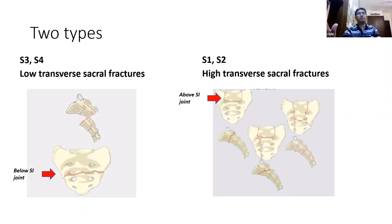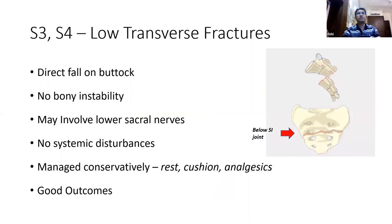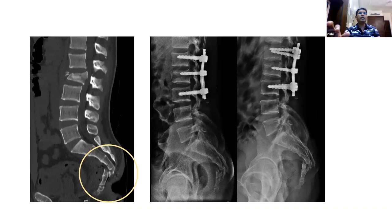Transverse sacral fractures are subdivided into two types. The low transverse sacral fracture, where the fracture line passes below the sacroiliac joint, and the high transverse sacral fracture, where the fracture line passes above or at the level of the sacroiliac joint. Low transverse fractures occur following a direct fall onto the buttock region, usually have no major structural instability to the pelvis or spine, rarely involve the lower sacral nerves, and no hemodynamic instability. They are well treated by conservative measures — rest, a cushion while sitting, and analgesics — with very good outcomes.